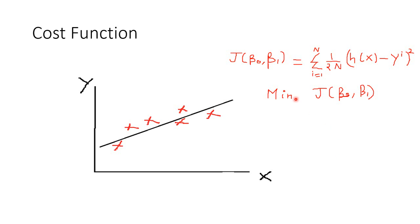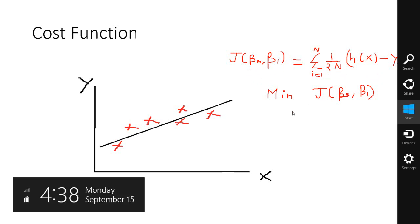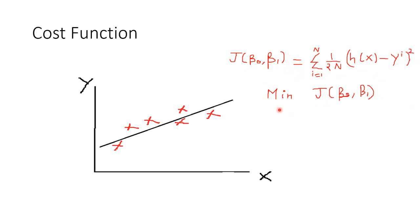The cost function for this hypothesis is defined like this. As you can see on the screen, we minimize the cost function with respect to beta0 and beta1. The hypothesis for which the cost function takes the minimum value is the best hypothesis among all possible hypotheses.